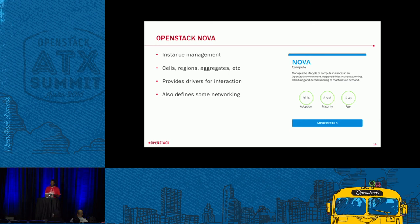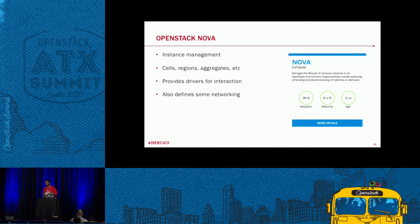Nova also provides drivers for interaction — it works with Hyper-V, KVM, and your different hypervisors on the back end. Nova provides the drivers to communicate with those. It also defines some networking. Nova Network is something some people are still using, while a lot of people are also using Neutron networking. It's kind of a matter of choice or relevant to your environment which one you decide to use.